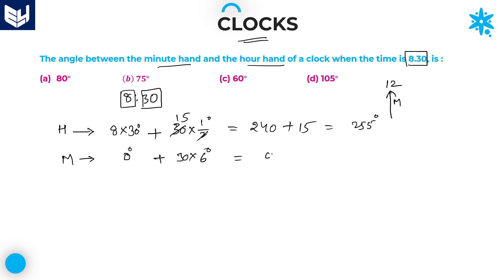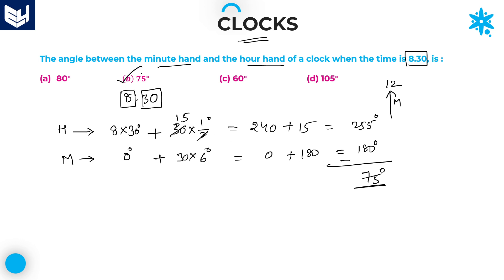The minutes hand total is 0 plus 30 into 6, which is 180 degrees. The angle between the minutes hand and hours hand is the difference between hours hand and minutes hand: 255 minus 180, which equals 75 degrees. Option B is the right answer for this question.